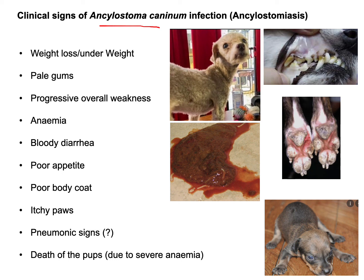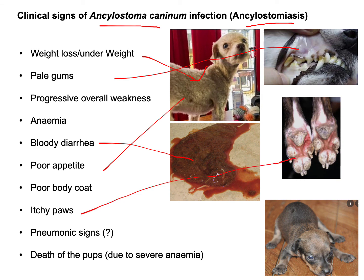Clinical signs of Ancylostoma caninum infection include weight loss, pale gums due to anemia, progressive weakness, bloody diarrhea, poor body coat, and itchy paws. Due to percutaneous L3 penetration of interdigital spaces, a sign called stamping of the legs is produced. Some L3 can reach the lungs, resulting in hemorrhagic pneumonitis, so pneumonic signs may also be found. The worst consequence of this disease is the death of puppies due to severe anemia.